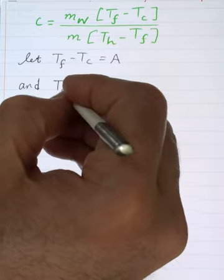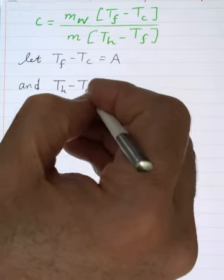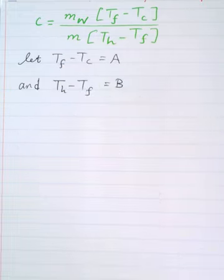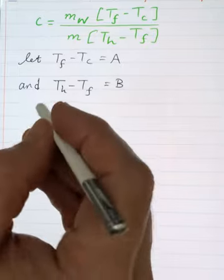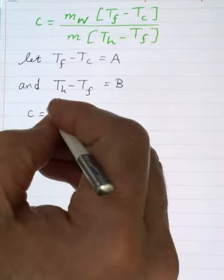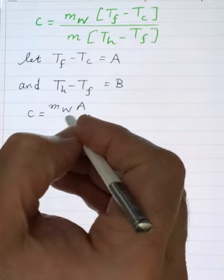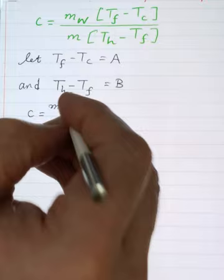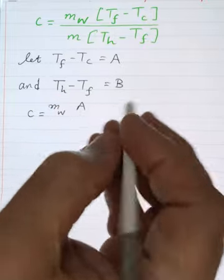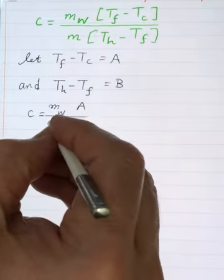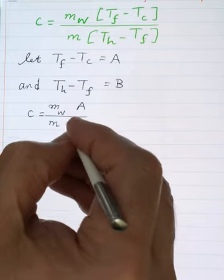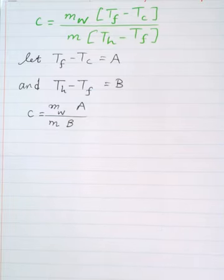So then it will be c becomes m_water multiply by A over m, the unknown, multiply by B. So here it's multiplication and division. We can solve it, it's one formula, but first we need to calculate A and the error of A, B and the error of B.